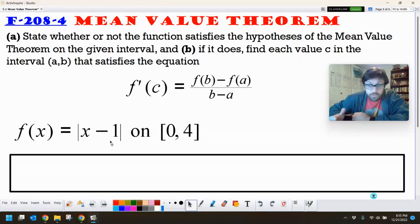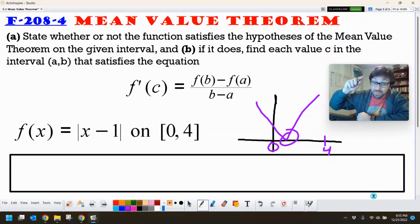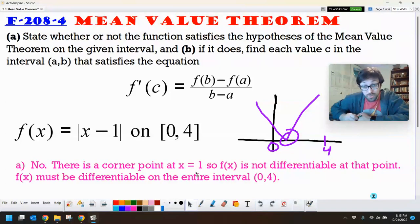Is this a continuous function? Yeah, it is totally continuous. We've got no problem with absolute value except at that corner point. If we think about the graph of absolute value, it would be something like this, you know, one to the right. And so it's between zero and four. Right here, we're not differentiable. And that is not on the end of that interval. So that's right smack in the middle of that interval. So our Mean Value Theorem does not apply. There's a corner point at x equals one. So f of x is not differentiable at that point. F of x must be differentiable on the entire interval of zero to four.